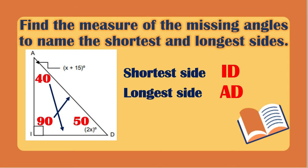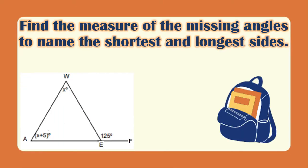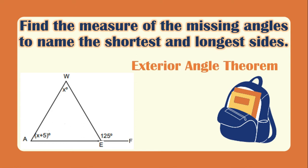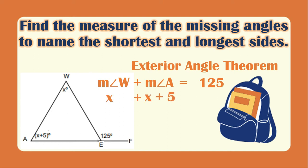Let's have another example. Using this figure, we need to find the value of X, but here we need to apply the exterior angle theorem. The exterior angle theorem states that if we add the two remote interior angles, we get the exterior angle. So if we add the measurement of angle W plus the measurement of angle A, we get the exterior angle which is 125 degrees. The measurement of angle W is X and the measurement of angle A is X plus 5, so X plus X plus 5 equals 125.